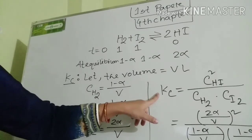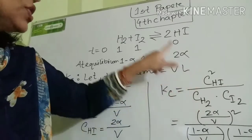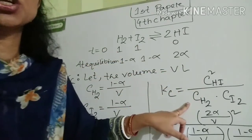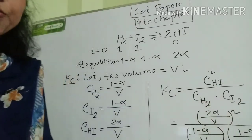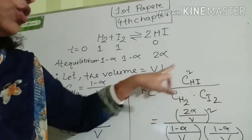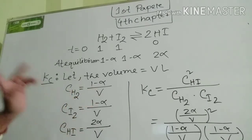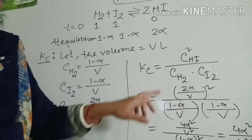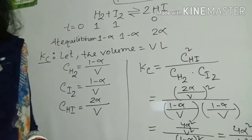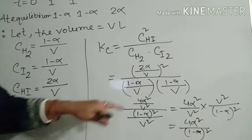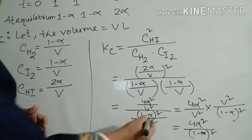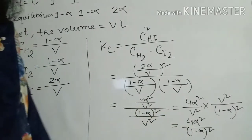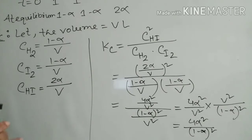Now we derive the equation of Kc. Kc equals the molar concentration of product over reactants: Kc = [HI]² / ([H₂] × [I₂]). Substituting the values, we get (2α/V)² divided by ((1−α)/V) × ((1−α)/V), which gives 4α²/V² divided by (1−α)²/V². The V² terms cancel, giving Kc = 4α² / (1−α)².